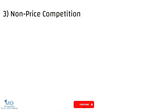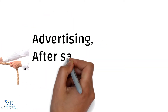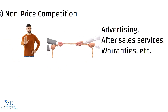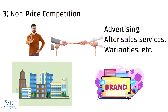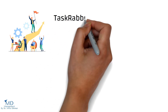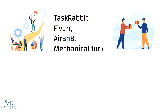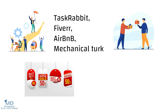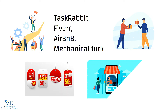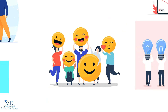Third, non-price competition. Firms try to avoid price competition due to the fear of price wars in oligopoly, and hence depend on non-price methods like advertising, after-sales services, warranties, etc. This ensures that firms can influence demand and build brand recognition. Non-price competition is a key strategy in a growing number of marketplaces — such as TaskRabbit, Fiverr, Airbnb, and Mechanical Turk — where sellers offer services as products and price differences are virtually negligible. They distinguish themselves in terms of quality, delivery speed, and customer satisfaction.